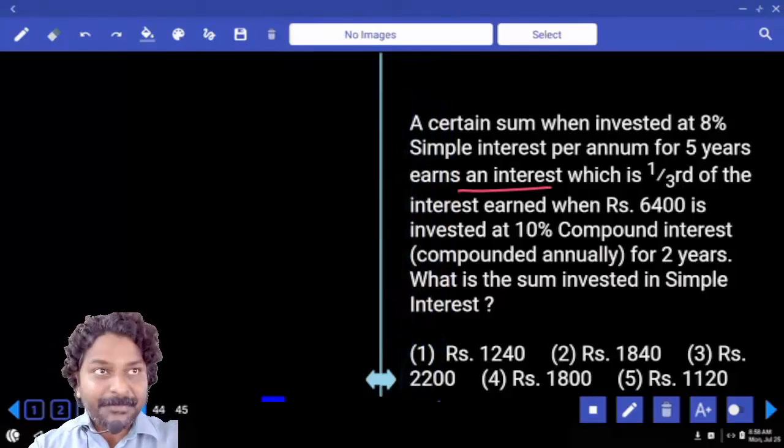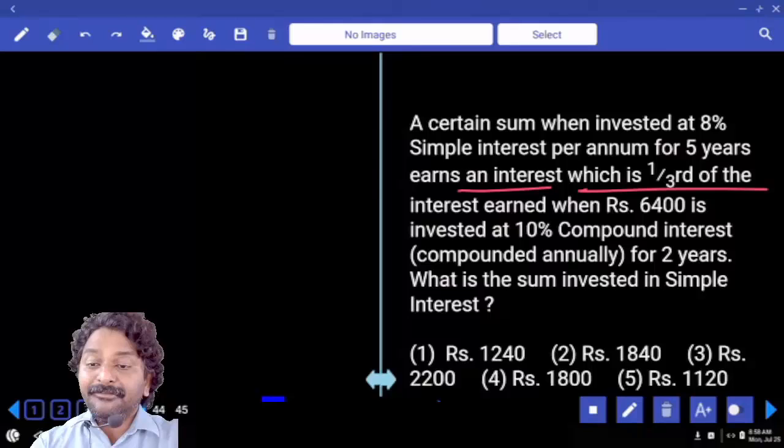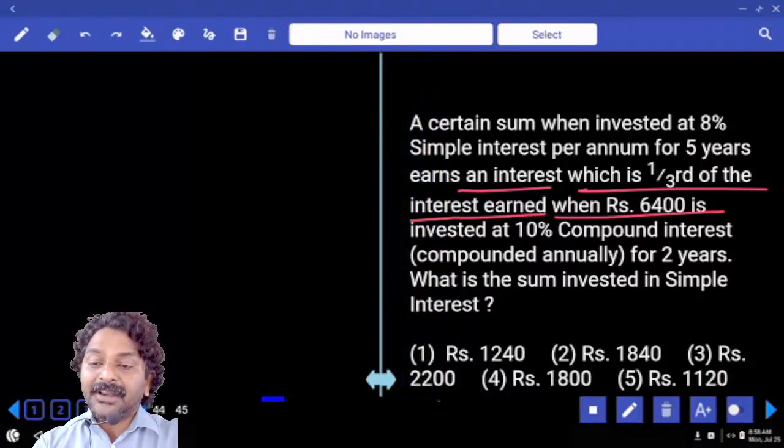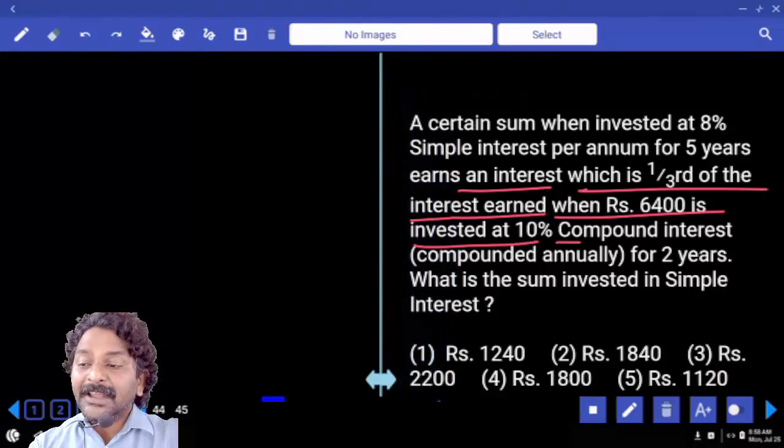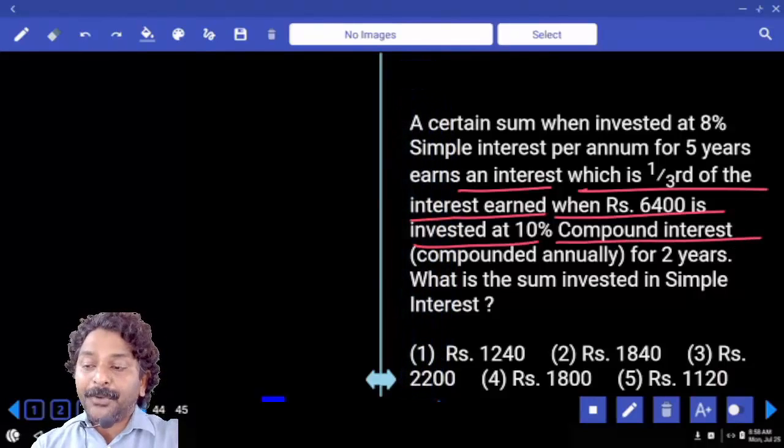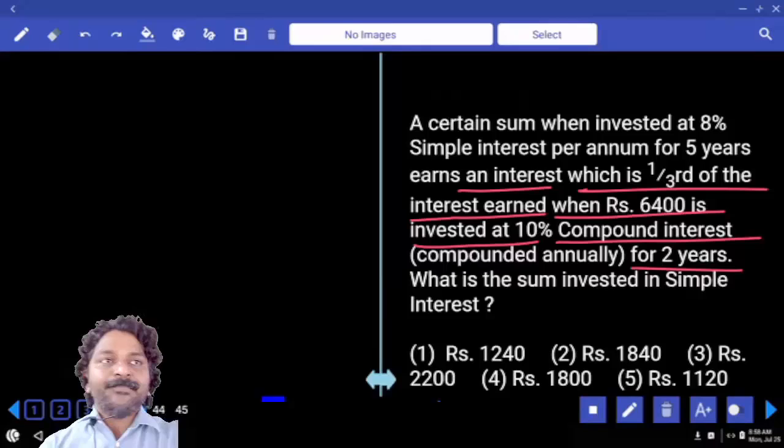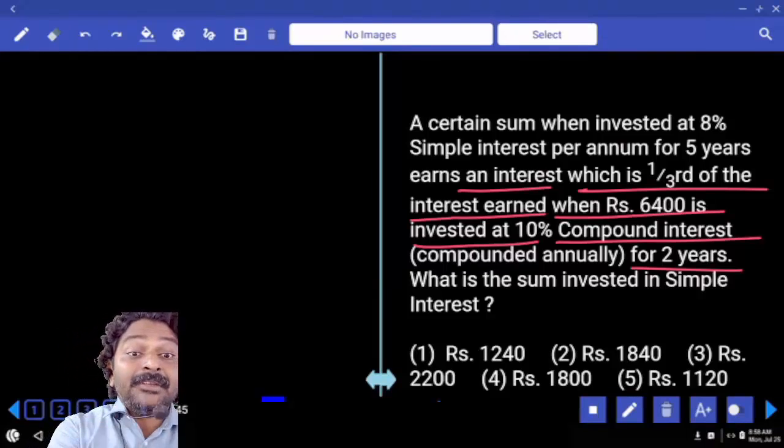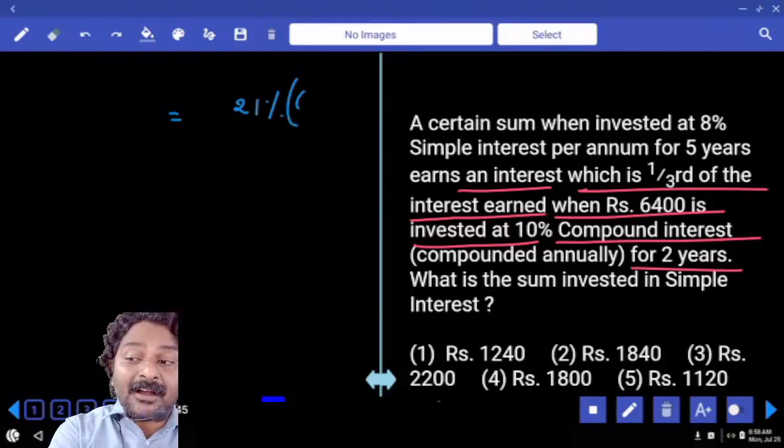This earns an interest which is 40% of the principal, and this equals one-third of the interest earned when Rs. 6400 is invested at 10% compound interest, compounded annually for 2 years. Compound interest for 2 years at 10% per annum is 21% of 6400.